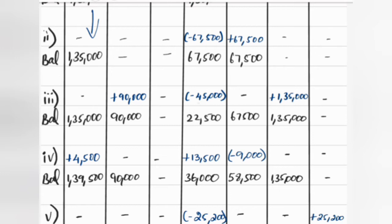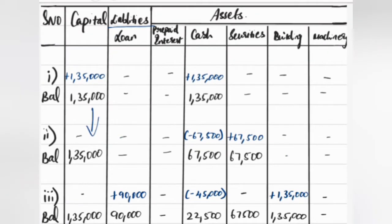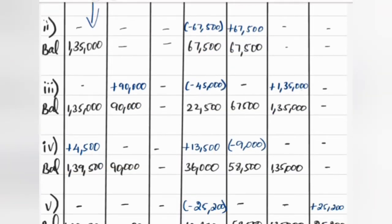Cash is minus ₹45,000 and building is ₹1,35,000. Now we balance: we bring down ₹1,35,000 minus ₹45,000 gives ₹67,500 in cash, and ₹67,500 in securities, and ₹1,35,000 in building. Now, next one.